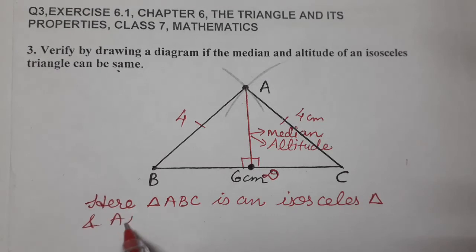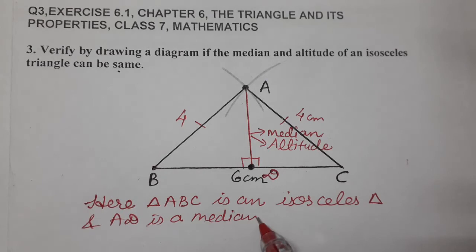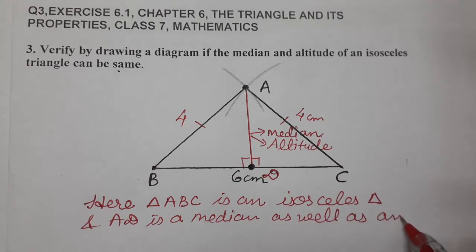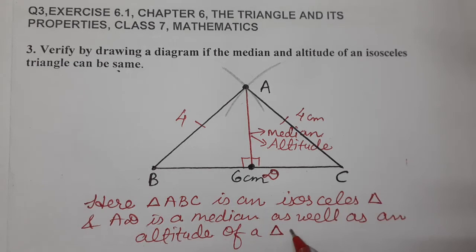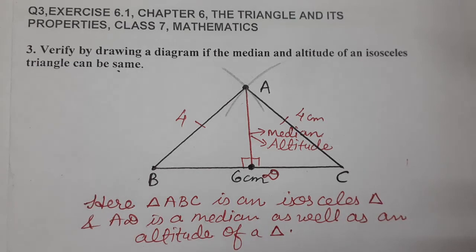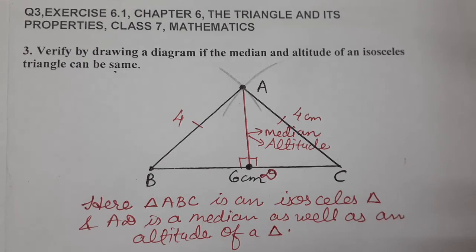AD is a median as well as an altitude of the triangle. This completes the question. I hope you understood. Thank you so much for watching the video.